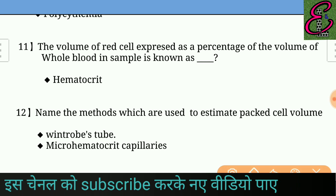Question number twelve: Name the methods used to estimate packed cell volume. Answer: Wintrobe's tube and micro-hematocrit capillaries.